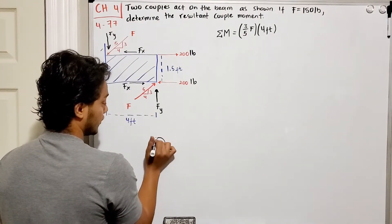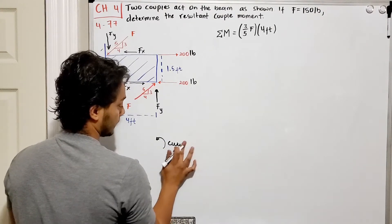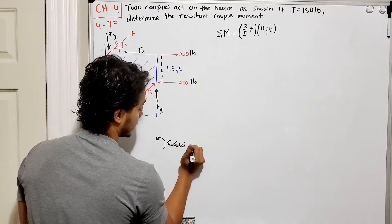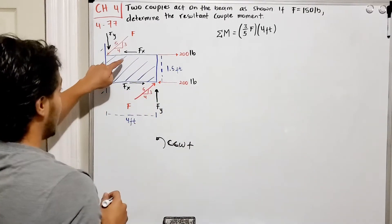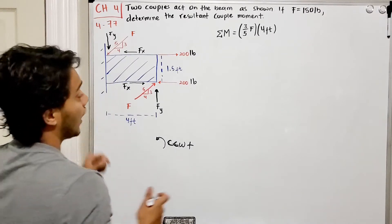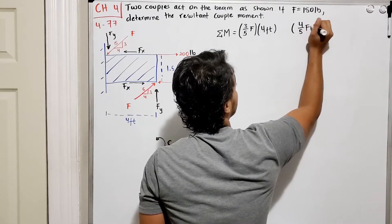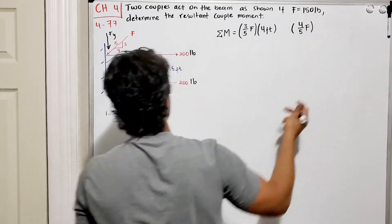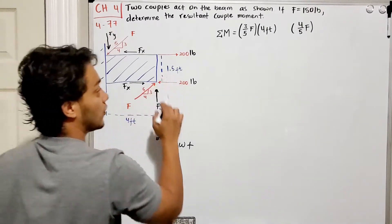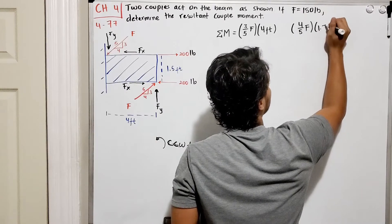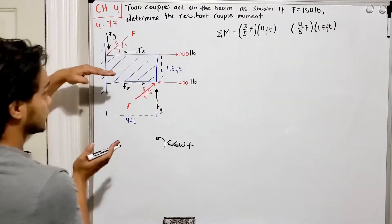In the x direction I will have 4 out of 5 of my force F multiplied by - we have these two forces that are separated by 1.5 feet. What's the direction of these guys? They're also counterclockwise so that makes them positive.